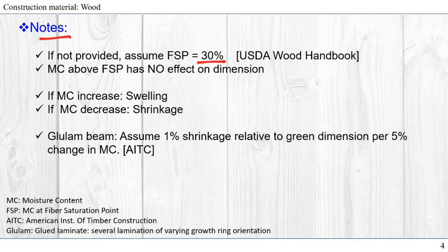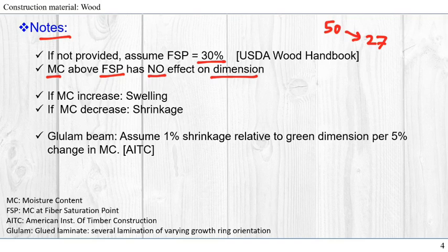We have to understand that moisture content above FSP has no effect on dimension. So if my FSP is 30%, if my moisture content drops from 50% to 27%, only the difference below 30% to 27% change will have the effect on dimension. Above 30% it doesn't work.